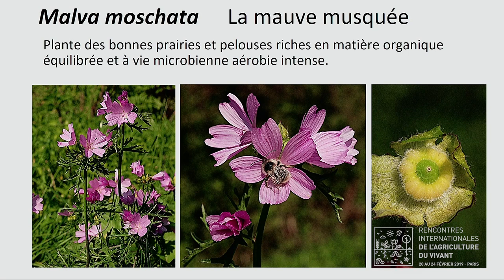Dans les mauves, on a la même problématique que dans les géraniums — il y a plein de mauves différentes. Certaines vont indiquer des sols qui ont des excès d'azote et des excès de potasse trop soluble, provoquant des désordres. Et il y a des mauves comme la mauve musquée qui est, au contraire, indicatrice des bonnes matières organiques.